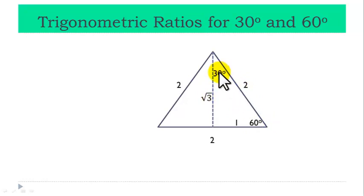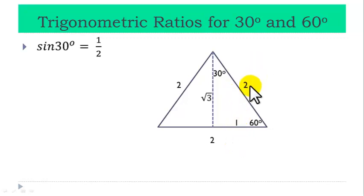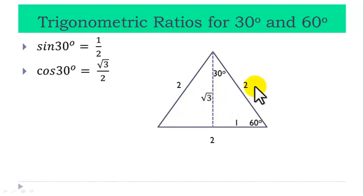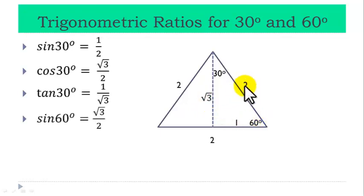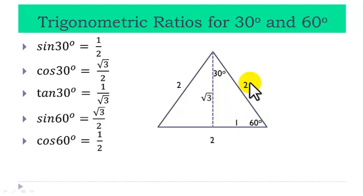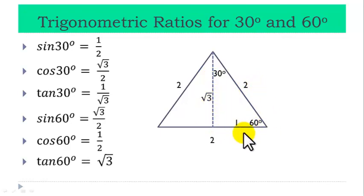We can now find the trig ratios for the two angles. For 30 degrees: sin 30 is opposite over hypotenuse — 1 over 2, that is one half. Cos 30 is adjacent over hypotenuse — root 3 over 2. And tan 30 is opposite over adjacent — 1 over root 3. For 60 degrees: sin 60 is root 3 over 2. Cos 60 is adjacent over hypotenuse — 1 over 2. And tan 60 is opposite over adjacent — root 3 over 1, that is root 3.